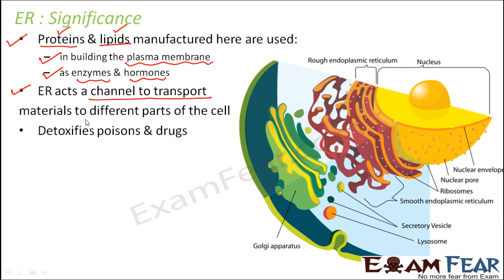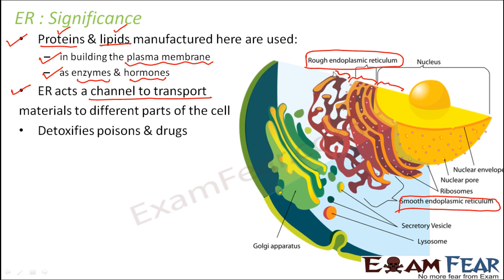Endoplasmic reticulum also acts as a channel to transport materials to different parts of the cell. The rough ER is located between the nuclear membrane and the smooth ER. Whatever substances come out of the nucleus through the nuclear pores are taken up by the rough endoplasmic reticulum, then sent to the smooth endoplasmic reticulum, and then transported to different parts of the cell.